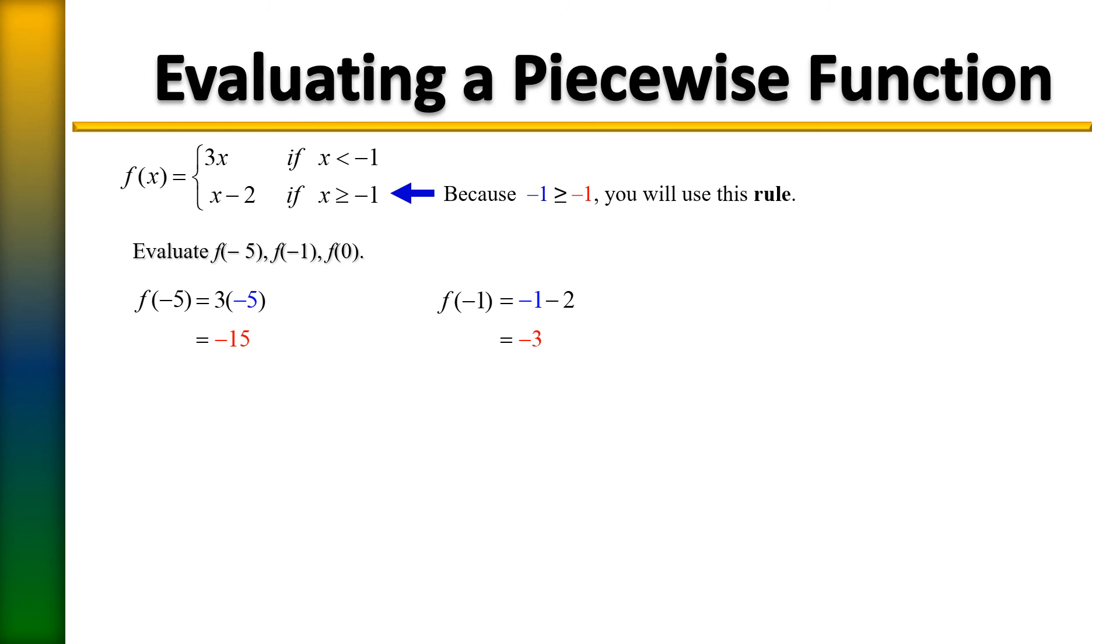We have one more to evaluate: f of 0. So is the number 0 less than negative 1 or is it greater than negative 1? We know it's not the same as negative 1. If you said greater, that is true because 0 is to the right of negative 1. So therefore 0 is greater than negative 1.